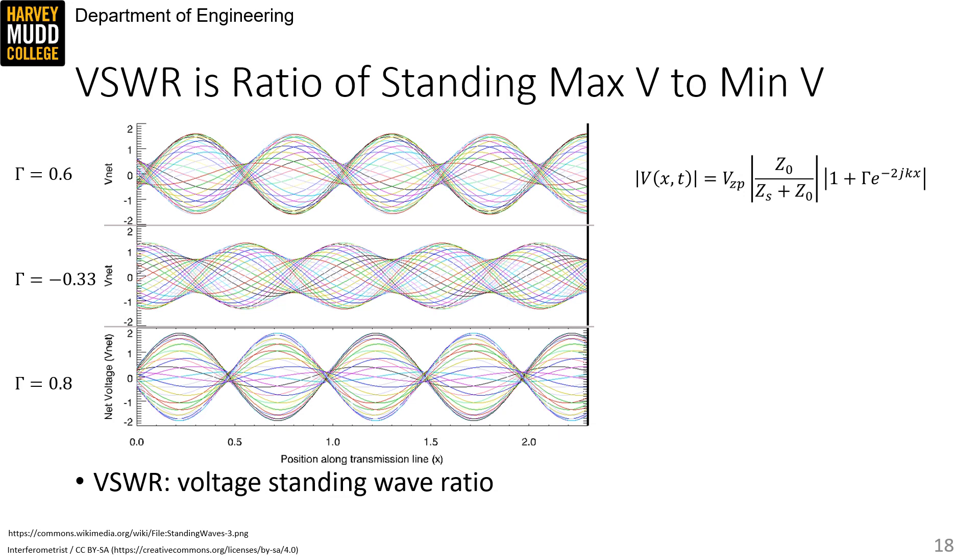The first thing I want you to notice is that the maxima and the minima of these standing wave patterns do seem to depend on the gamma in the way we predicted. We thought the maxima would have a height of 1 plus gamma times the amplitude, which is 1 volt in this case, and the minimum would have a height of 1 minus gamma times the amplitude. We can see that this peak is at 1.6 volts, and this trough is at 0.4 volts, which lines up with expectations.